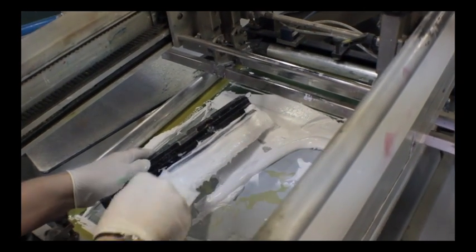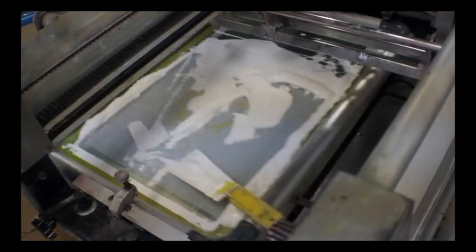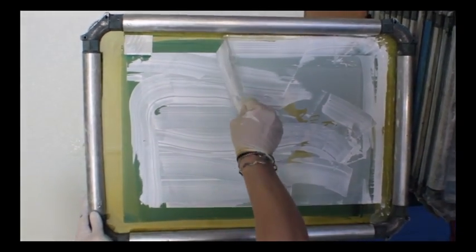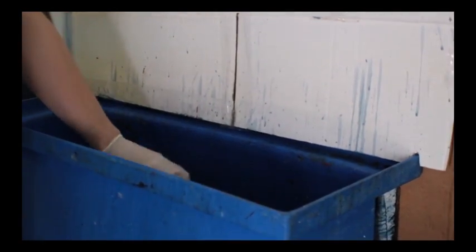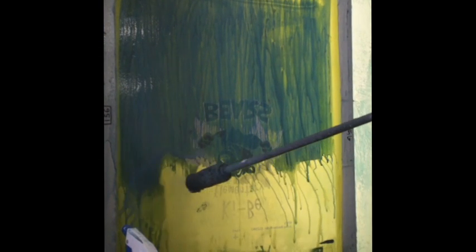The flood bars, squeegees and ink are removed from the printing machine. The tape is removed from the screens and they are placed in a solution to remove excess ink and break up emulsion. Once this is done, the screens are scrubbed clean so that they can be ready for the next order.